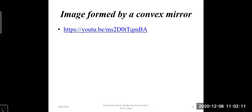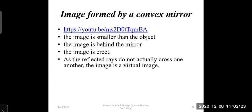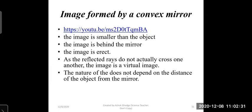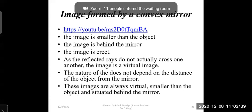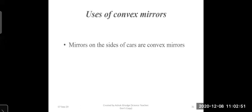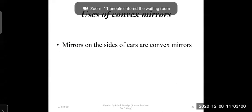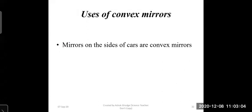In a convex mirror, the image obtained is always smaller than the object, always erect, and situated behind the mirror. Because reflected rays do not actually cross one another, the image is virtual. The nature of the image does not depend on the distance of the object from the pole — it is always virtual, erect, and smaller than the object. Convex mirrors are used as side mirrors on cars and two-wheelers, and large convex mirrors are fitted in shops at blind spots.